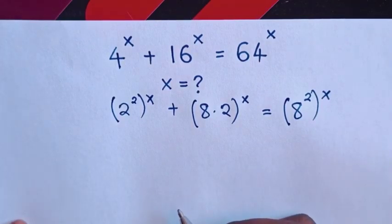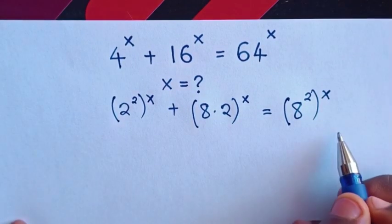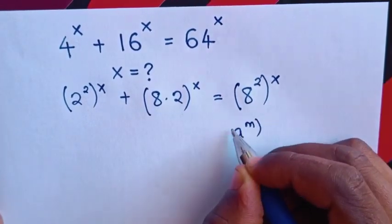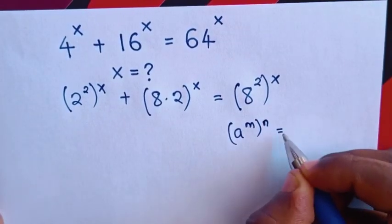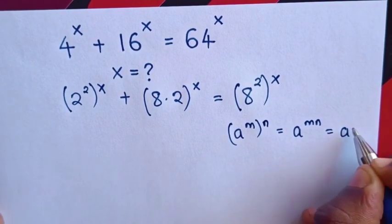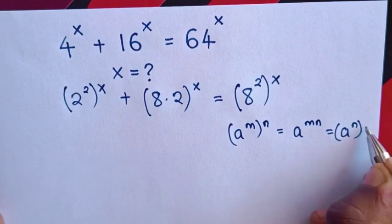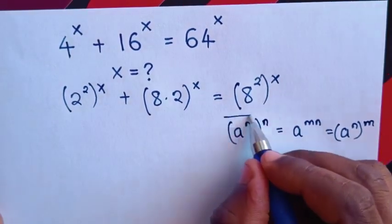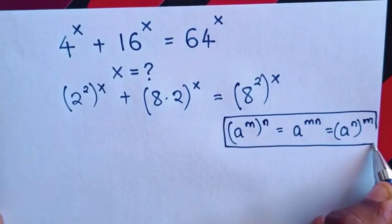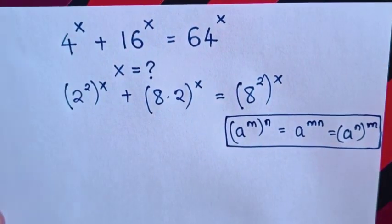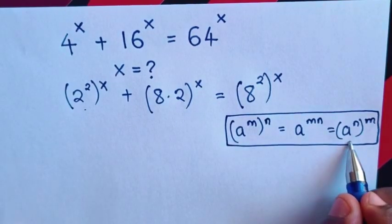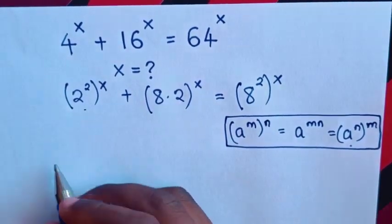In the next step, we will apply the exponential rule, which states that (a^m)^n = a^(mn) = (a^n)^m. We will use this rule to exchange the powers inside the brackets.